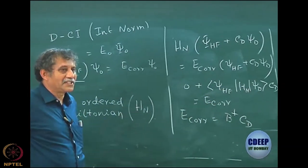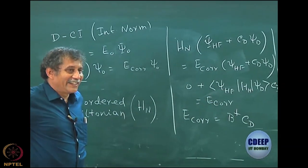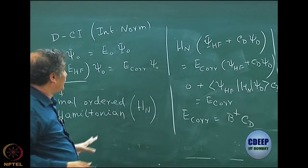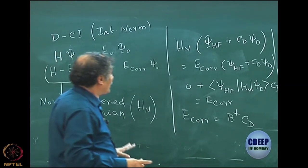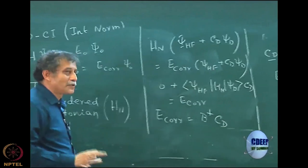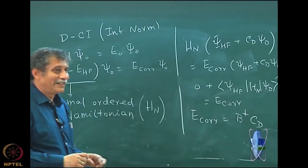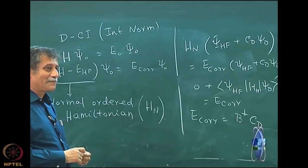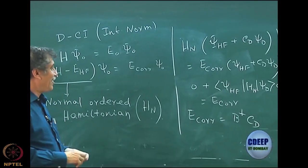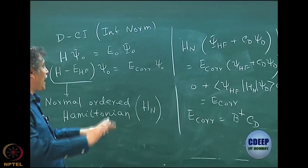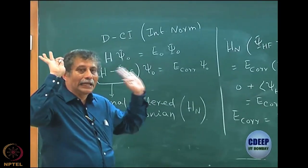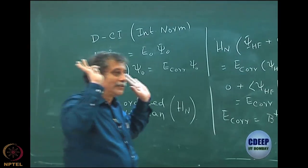Now everything H is H_N. I have already moved to the normal-order Hamiltonian. The notations are important — otherwise it will be confusing. I am talking about everything in terms of H_N now. In fact, later on when we write, we forget about H entirely — whatever is H is H_N.